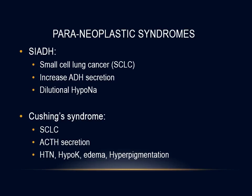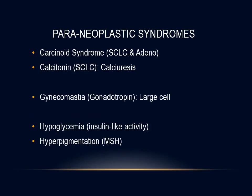Ectopic production of adrenal corticotropin (ACTH) can cause Cushing syndrome. Patients typically present with muscle weakness, weight loss, hypertension, hirsutism, hyperpigmentation, and osteoporosis. Hypokalemic alkalosis and hyperglycemia are usually also present. Other rare paraneoplastic syndromes include carcinoid syndrome secondary to small cell carcinoma, calcitonin release causing hypocalcemia, gynecomastia from gonadotropin release by large cell carcinoma, hypoglycemia due to insulin-like activity, and hyperpigmentation from melanocyte-stimulating hormone release.